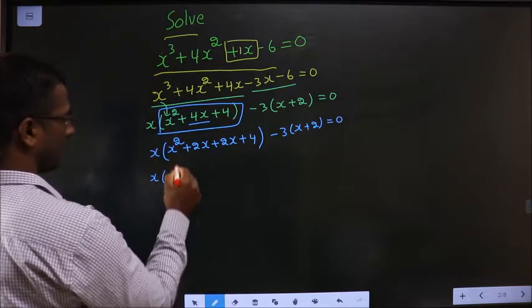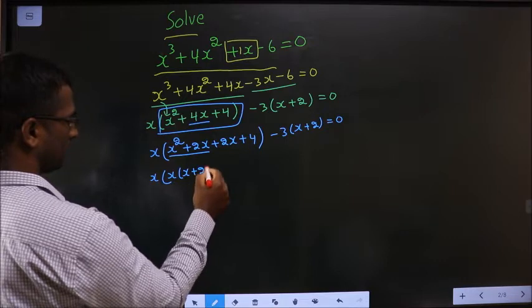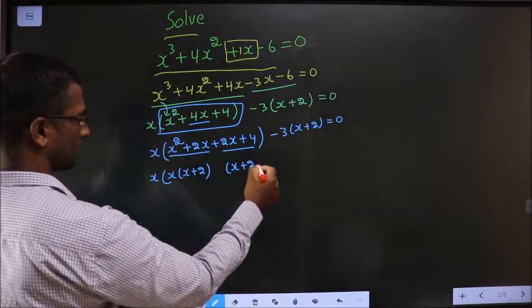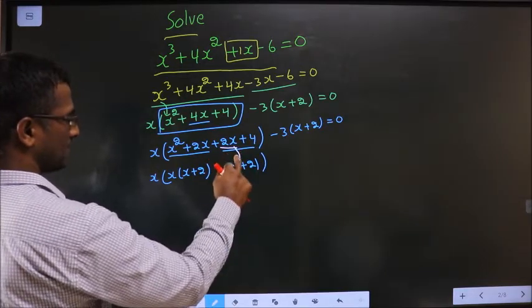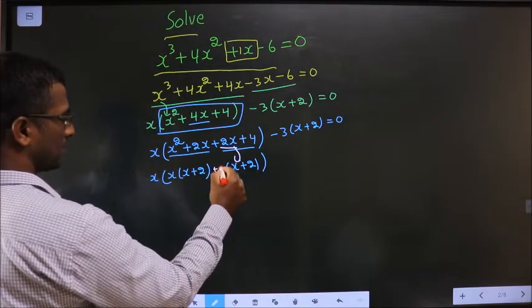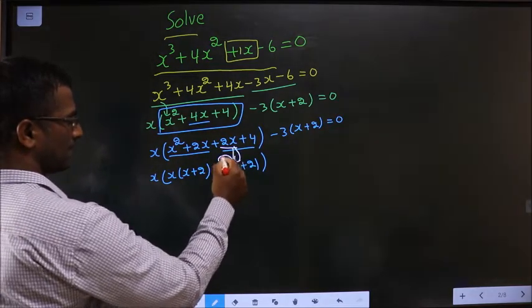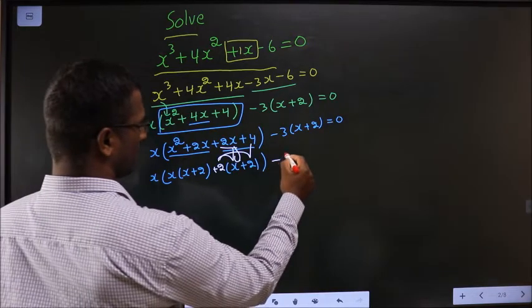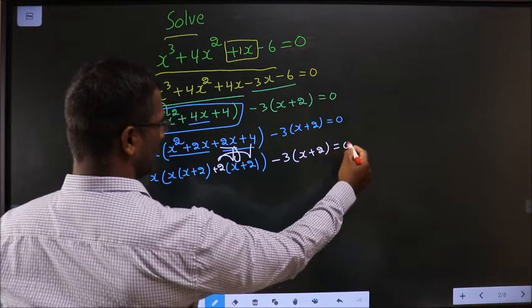Now what can I take common? I take common from these two, x times x plus 2. Over here also I should get the same thing. From plus 2x, x is gone inside means outside is plus 2. If in doubt you can multiply and see. Minus 3 times x plus 2 equal to 0.